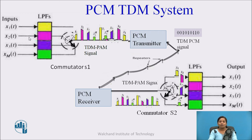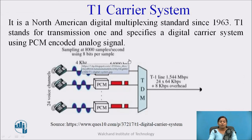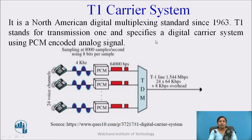We can transmit a number of signals over a single communication channel using the PCM-TDM system. One application of this system is the T1 carrier system. T1 stands for Transmission 1 and specifies a digital carrier system using PCM-encoded analog signals.